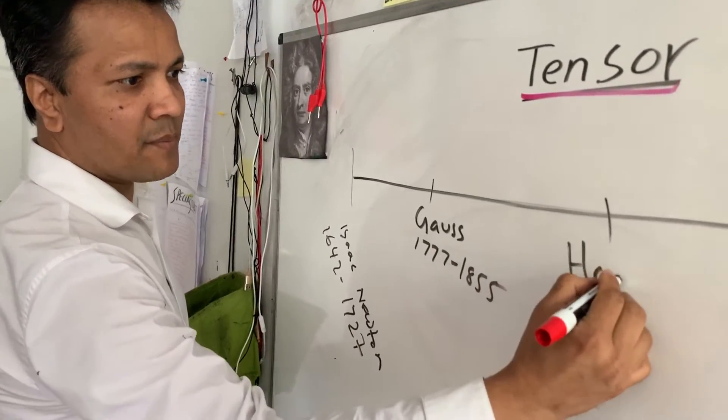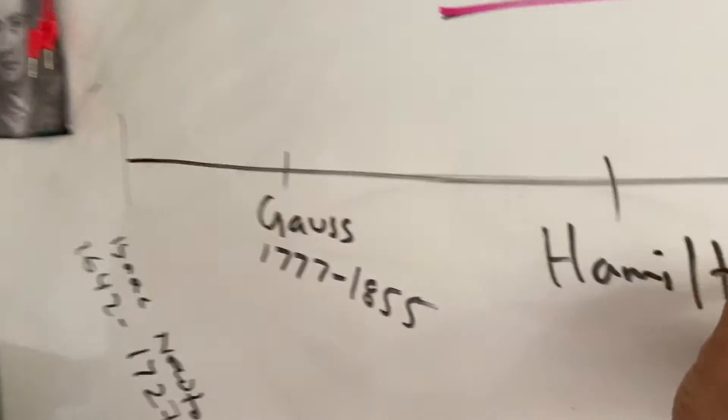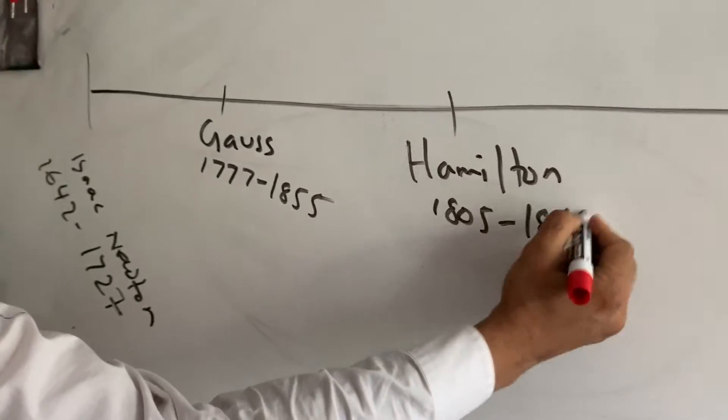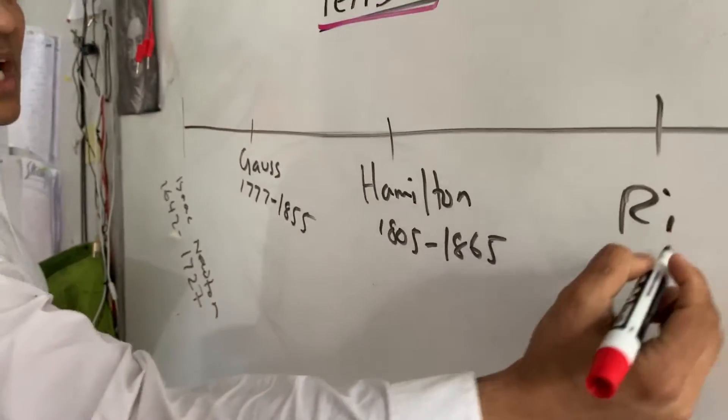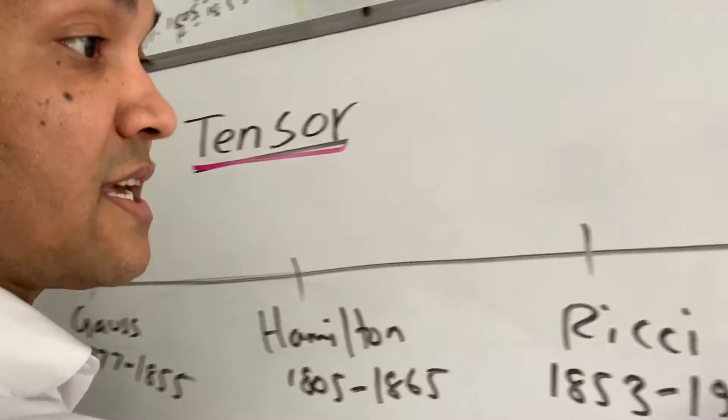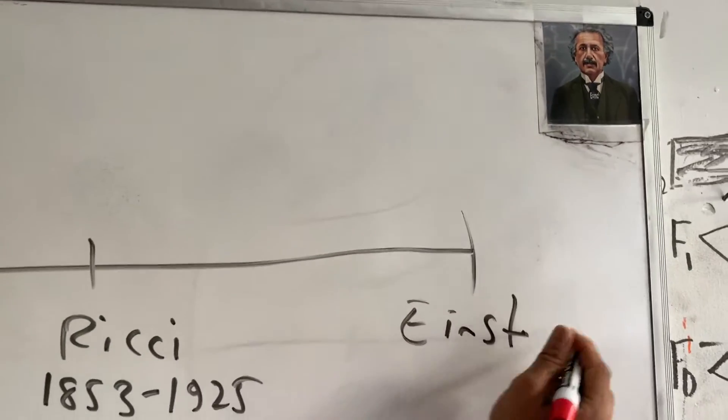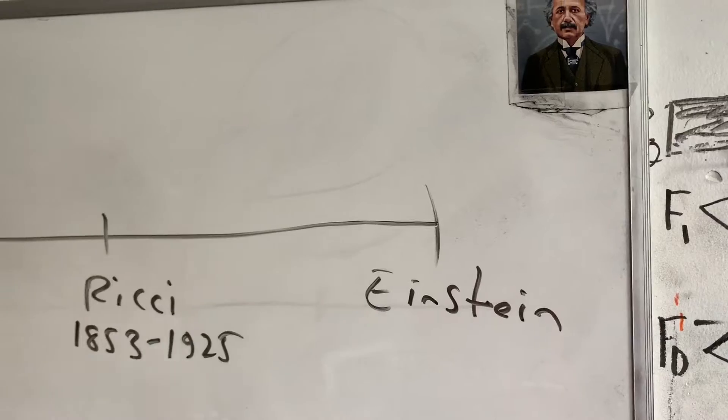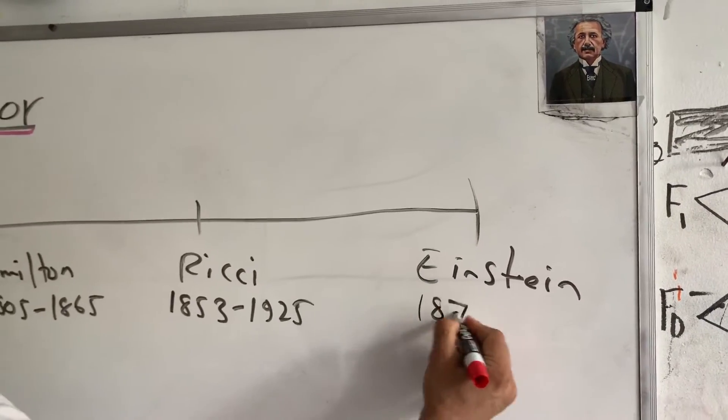Then it takes us to Hamilton. Hamilton is 1805. He did not live a long life. Ritchie, Italian guy, didn't live a long life. And then of course Einstein. Einstein was born in 1879.